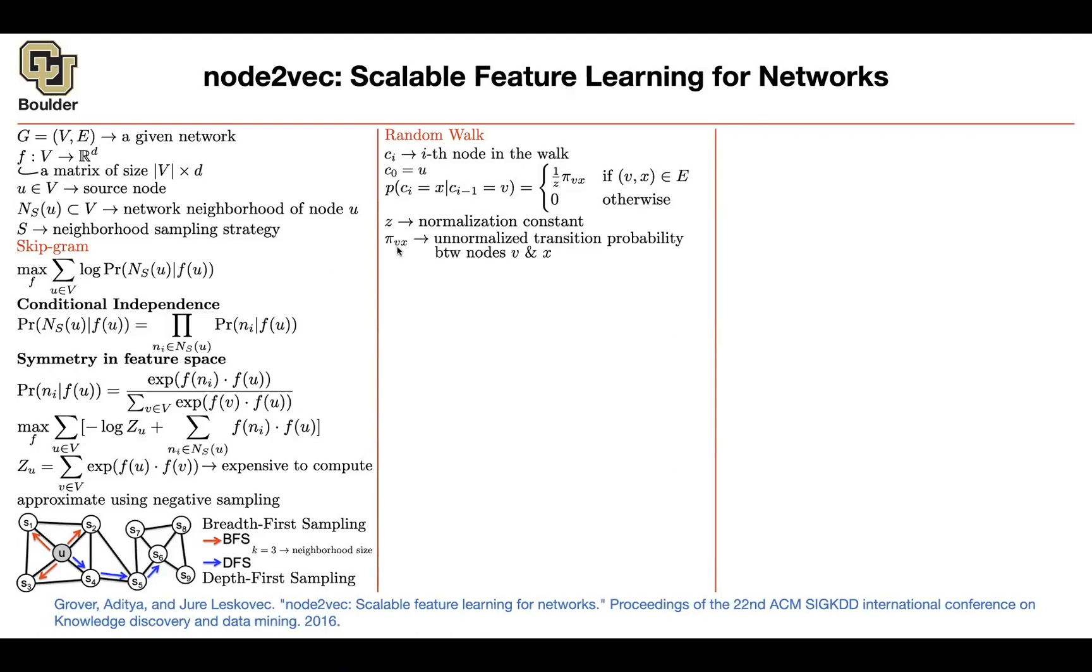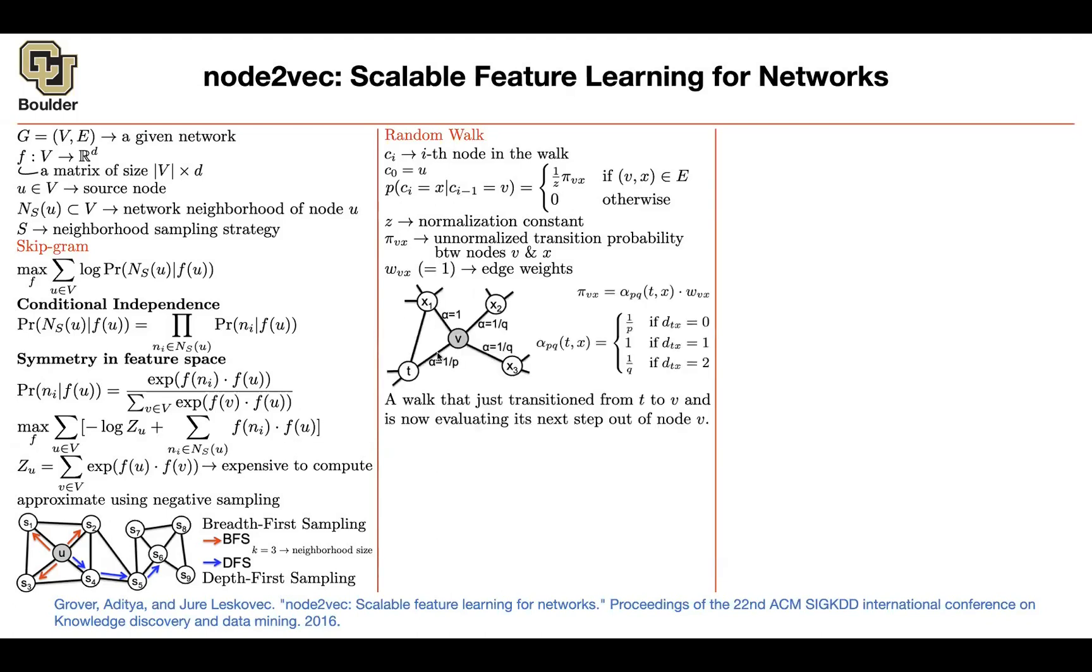But what is this pi of VX? It's the transition probability between V and X. How do you set it? Maybe one idea is to look at the edge weights, but what if the edge weights are one? How would you set that? So this is an example for illustration purposes.